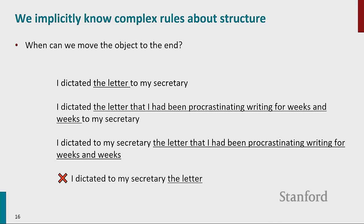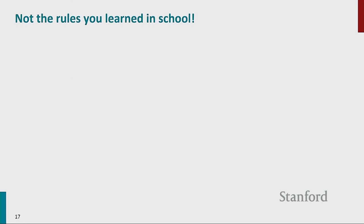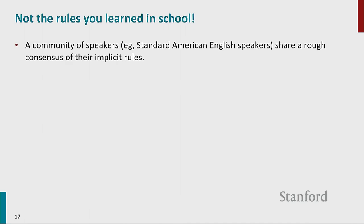This rule is actually not that easy to explain — linguists have tried many ways to make sense of it, but it's something we all just know. When I say 'rules of grammar,' these are not the prescriptive rules we're usually taught. A community of speakers shares a rough consensus of implicit rules, and these vary across individuals at the margins. A grammar is an attempt to describe all these rules — linguists might write a big book called 'The Grammar of the English Language,' but it will never be large enough to describe all of them. Language is so complex.